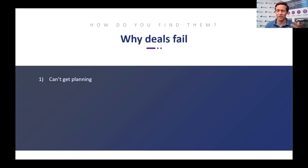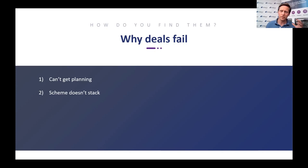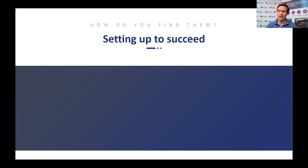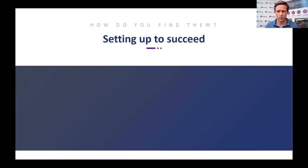The first reason a deal might fail is we don't get planning on it — that's one of the big obvious ones. The second is the schemes don't stack up financially. So if we bear those two things in mind, we can re-engineer that and find opportunities. We want to set ourselves up to succeed and reverse-engineer things to go and find stuff that works.